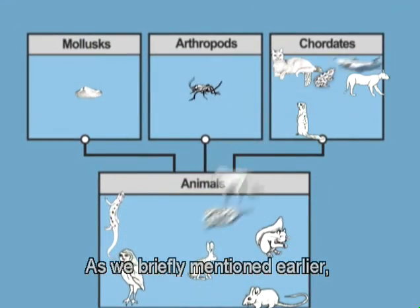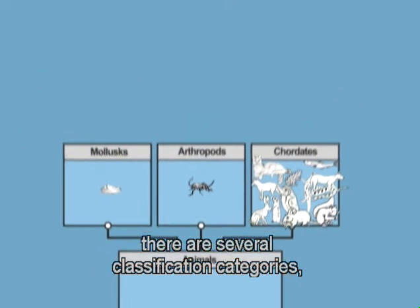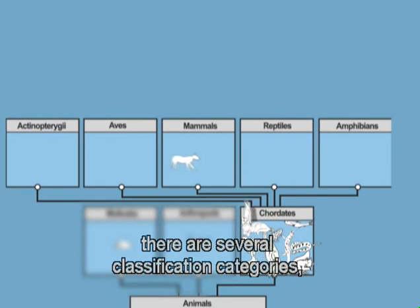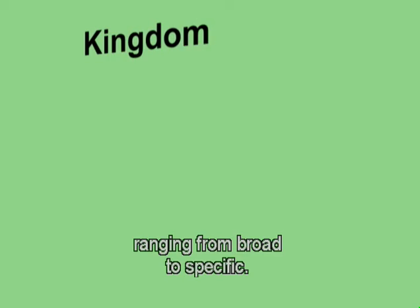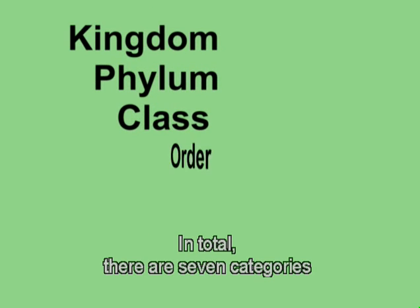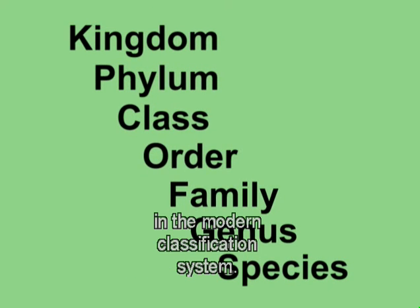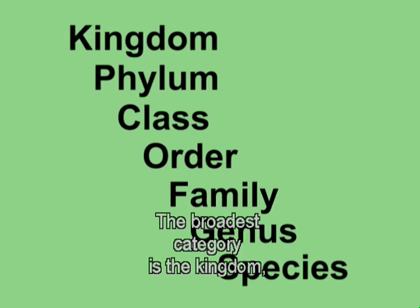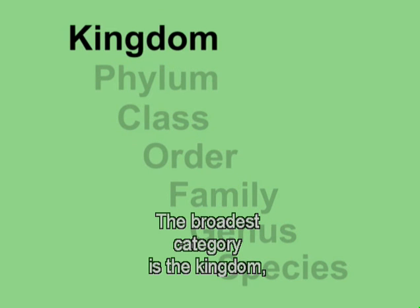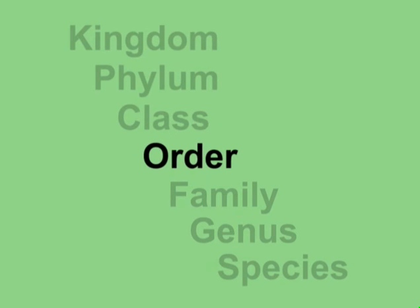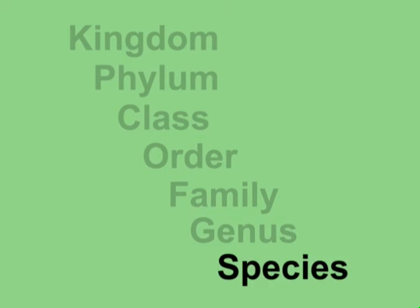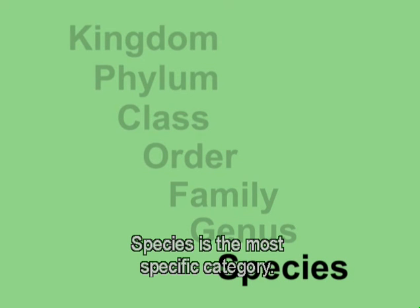There are several classification categories ranging from broad to specific. In total, there are seven categories in the modern classification system. The broadest category is the kingdom, then phylum, class, order, family, genus, and species. Species is the most specific category.